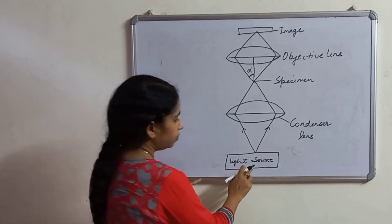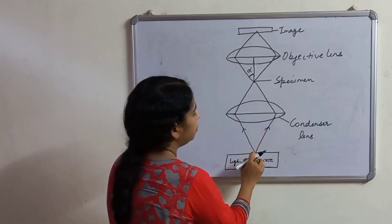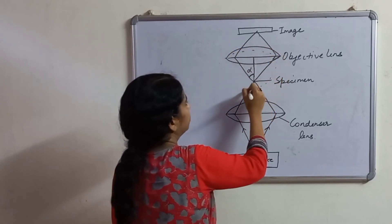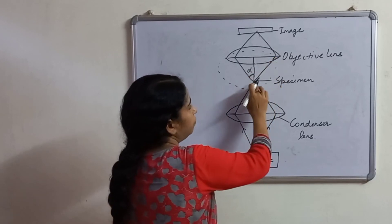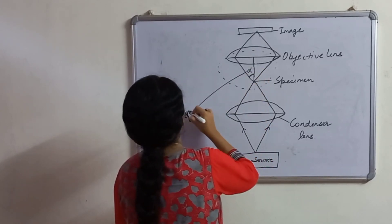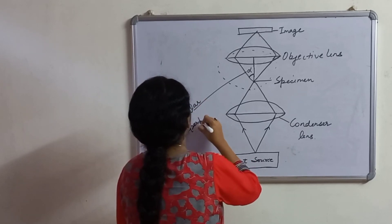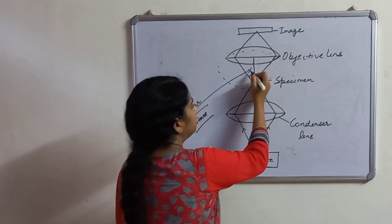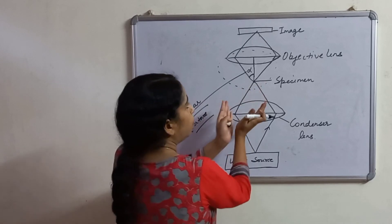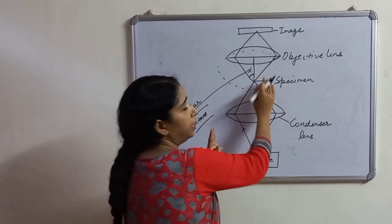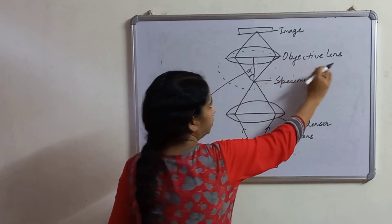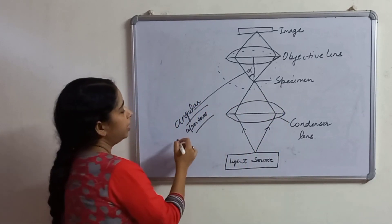This diagram shows the path of light in a light microscope. Here is the light source, and the condenser lens focuses the light on the specimen. The cone of light enters the objective lens from the specimen. The angular aperture is this angle — it is defined as the half of the angle of the cone of light which enters the objective lens from the specimen.